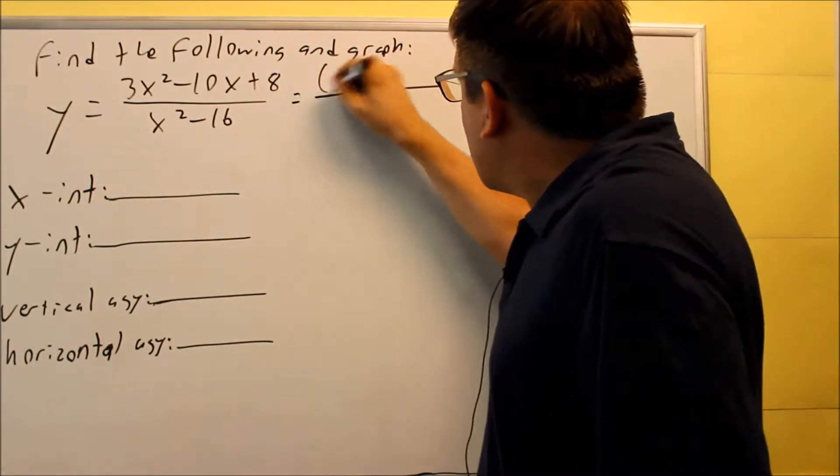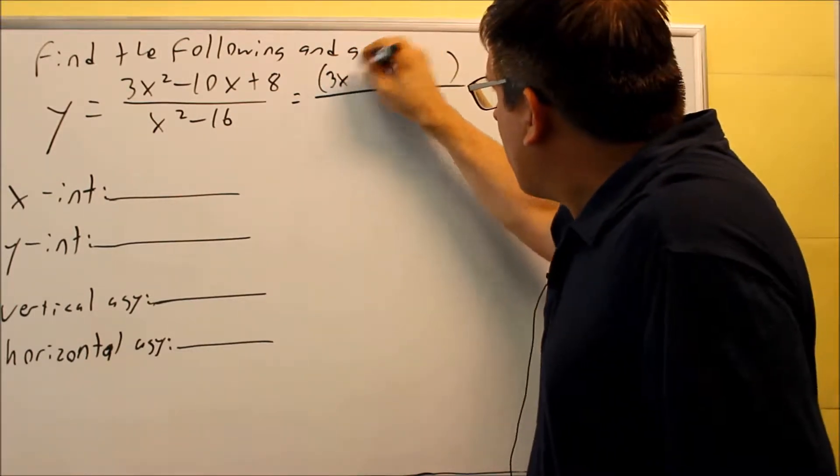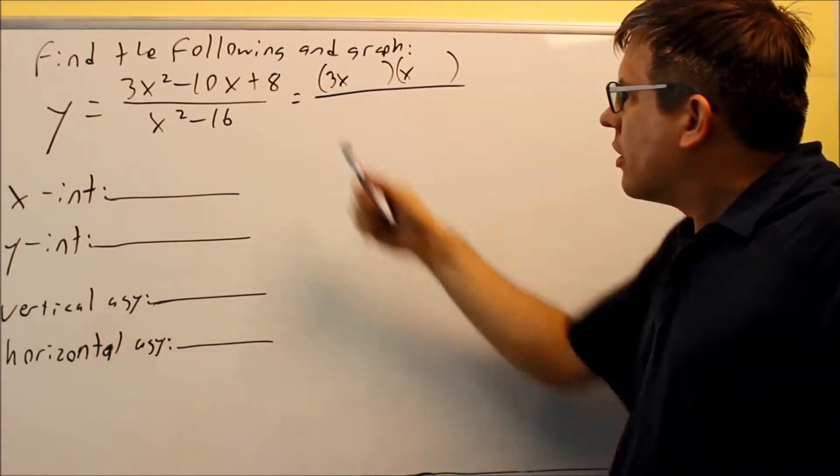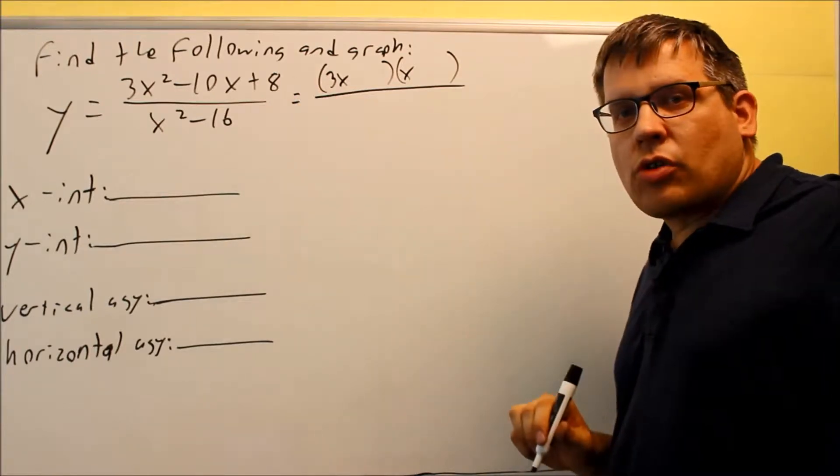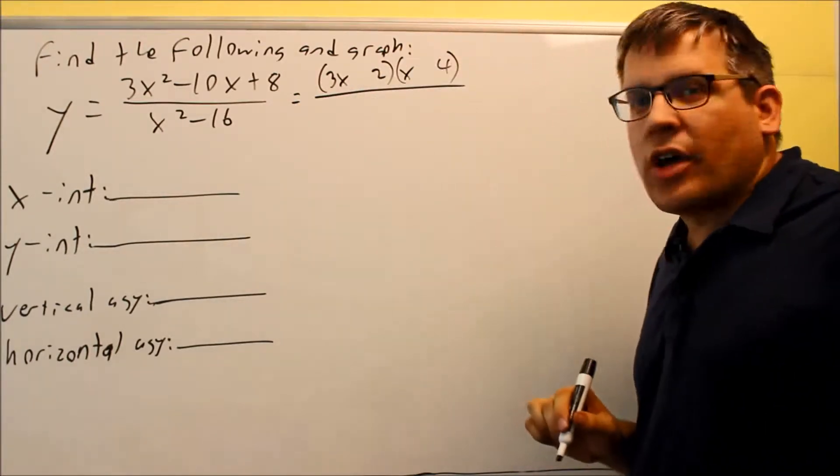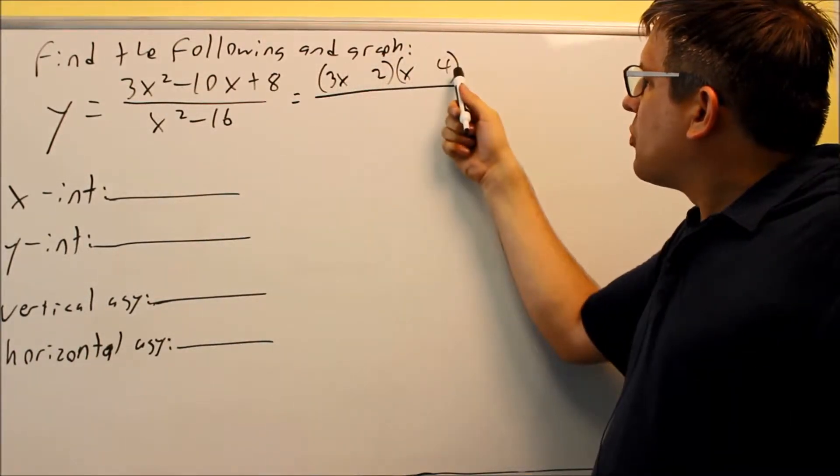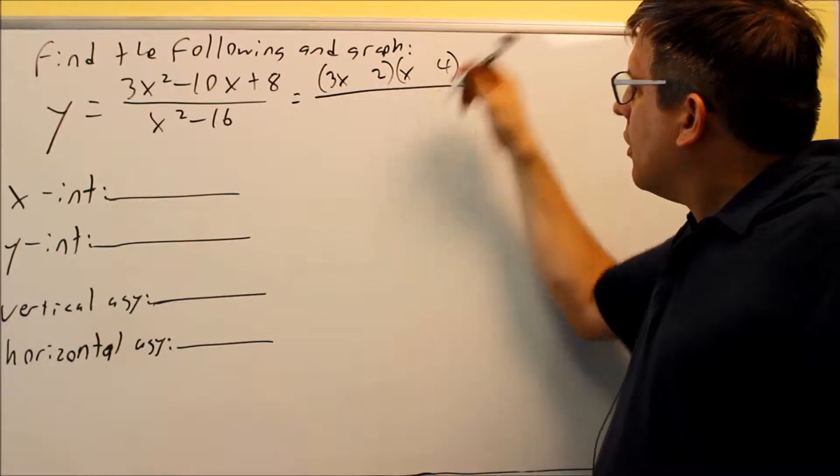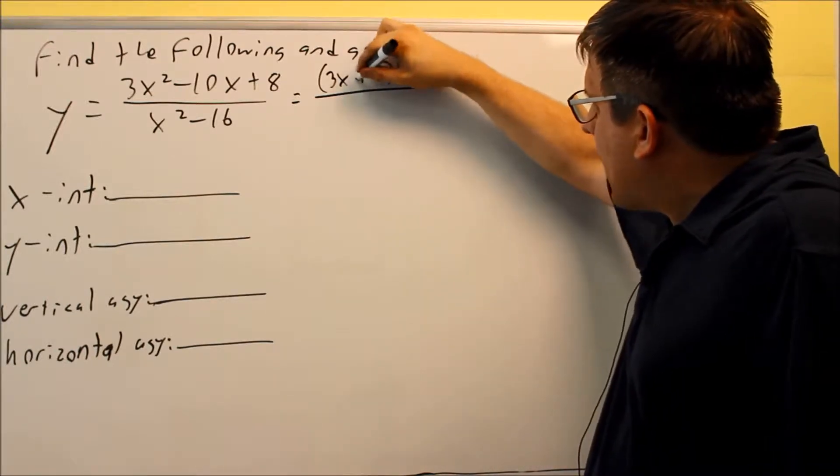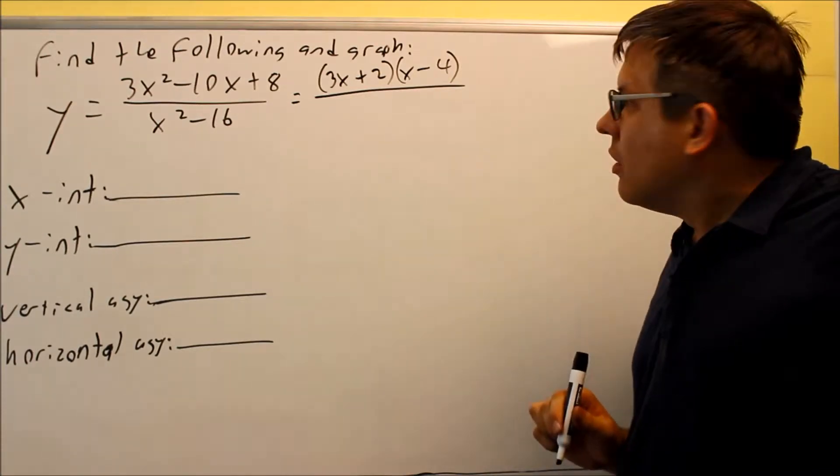Now for the top one I'm going to do this one by trial and error. So we know that the 3x and x are going to be inside here and then for 8 we can try 1 and 8 or 2 and 4. I'll start with 2 and 4 and see if that works. I want to get a minus 10 in there, so 3x times 4 is positive 12 and a 2 here. So if I make this negative and this one positive I'll get negative 12 plus 2 that will give me negative 10 there for the middle term.